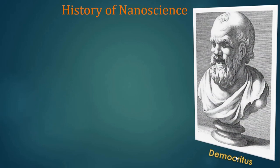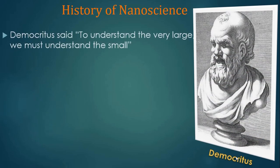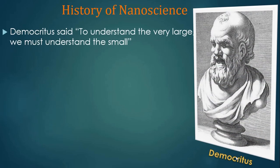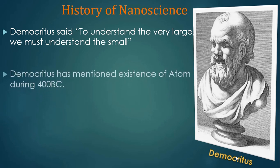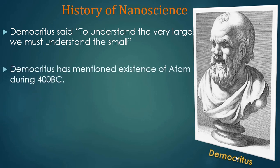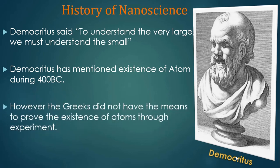During 400 BC, Democritus said, 'To understand the very large, we must understand the small.' Democritus mentioned the existence of atoms. However, the Greeks did not have the means to prove the existence of atoms through experiment.